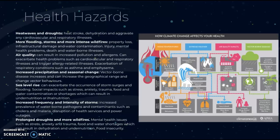There is also the possibility of increased frequency and intensity of storms, leading to increased prevalence of waterborne pathogens and contaminants such as cholera and malaria, disruption of health services, and power outages. Finally, prolonged droughts and more wildfires from climate change can lead to mental health issues such as stress, anxiety, and trauma, as well as food and water shortages resulting in dehydration, undernutrition, food insecurity, and forced migration.